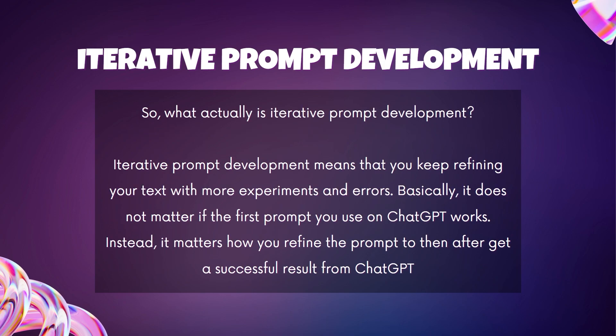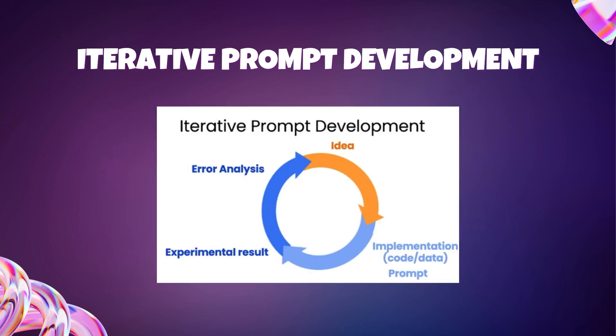So what actually is iterative prompt development? Iterative prompt development means that you keep on refining your text with more and more experiments and errors. It does not matter if the first prompt you send to ChatGPT works — instead, it matters how you refine that prompt to then get a successful result. If you look at this picture here, it shows a pretty good idea of what iterative prompt development actually is.